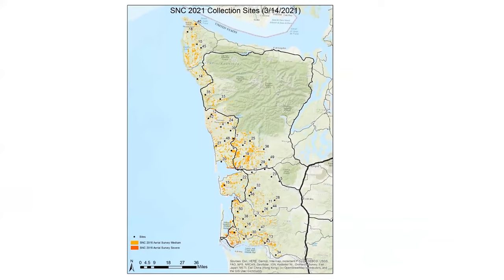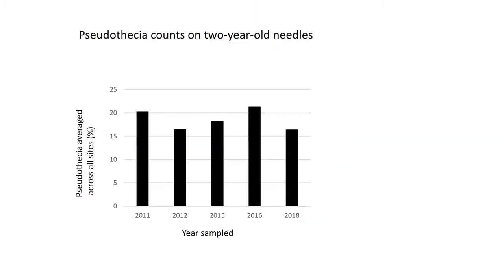We continue to monitor incidence and severity from the ground. The sampling points on this slide represent areas surveyed this spring, all located within areas that previous aerial surveys identified as symptomatic stands of Douglas fir. Despite large variability in symptomatic acres detected via aerial survey, disease severity as measured by pseudothesia occurrence and foliage retention has remained relatively stable over the years. The average percentage of pseudothecia across all sites has varied only from about 16 to 21 percent, likely influenced by weather-related factors.